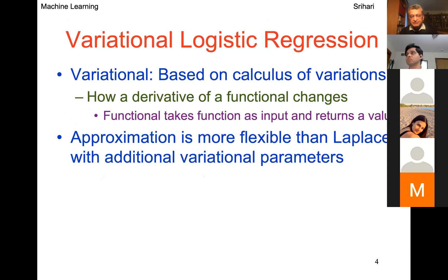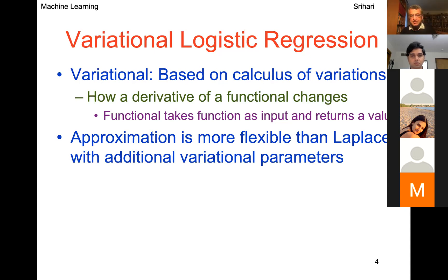A functional takes a whole function as input and produces a value as output, unlike an ordinary function which takes a value as input and produces a value as output. The variational approximation is more flexible than Laplace, with additional variational parameters. Let's look at a diagram to motivate this.